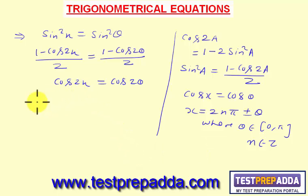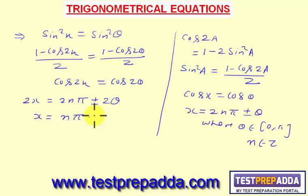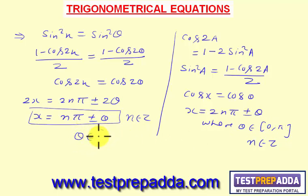Writing the general solution here: 2x = 2nπ ± 2θ, so x = nπ ± θ. Note that in the earlier cosine formula θ was between 0 and π, but since we now have 2θ, we need 2θ ∈ [0, π], which means θ ∈ [0, π/2].